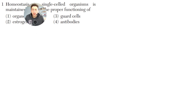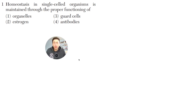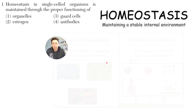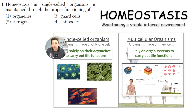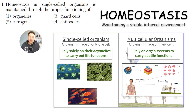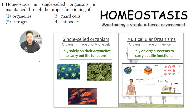Question one: homeostasis in a single-celled organism is maintained through the proper functioning of — organelles, estrogen, guard cells, or antibodies. Homeostasis is a very important word on the biology Regents exam, like biodiversity as well. Homeostasis means maintaining a stable internal environment. All organisms on earth are doing whatever it takes to maintain homeostasis, which is a stable internal environment inside of the organism.